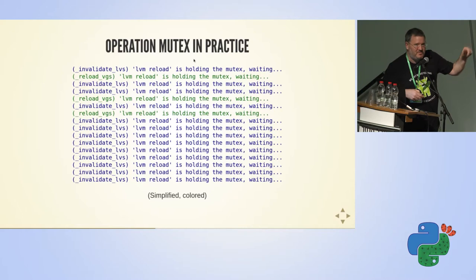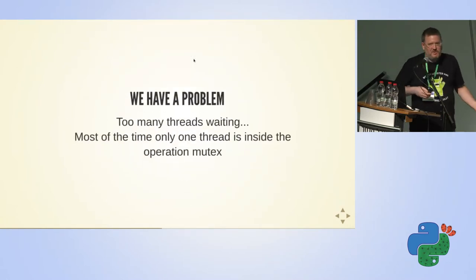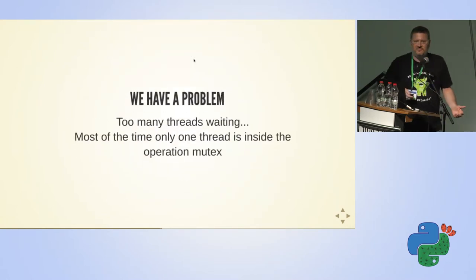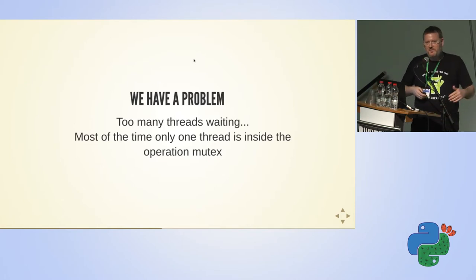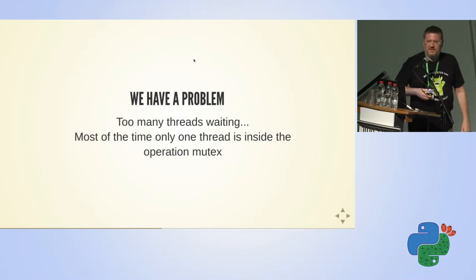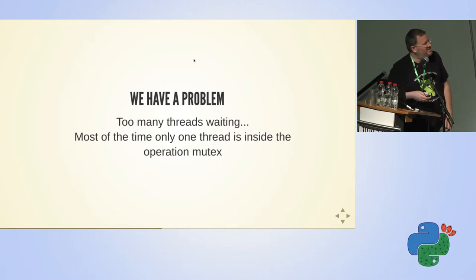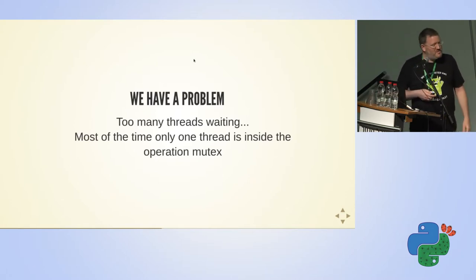What is the issue we can see in this log? What is wrong here? Well, it's wrong because all the threads are waiting — invalidate threads are waiting and reload threads are waiting. I've seen a lot of logs, and it turns out that usually you have one thread inside the mutex and all the other threads are waiting. So basically this mutex behaves like a regular lock with all this fancy code.